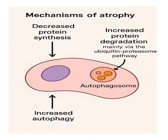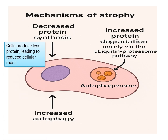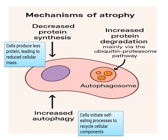What are the mechanisms of atrophy? There are three: decreased protein synthesis, increased protein degradation, and increased autophagy. In decreased protein synthesis, cells produce less protein leading to reduced cellular mass. In autophagy, cells initiate self-feeding processes to recycle cellular components. Increased protein degradation is mainly via the ubiquitin-proteasome pathway.